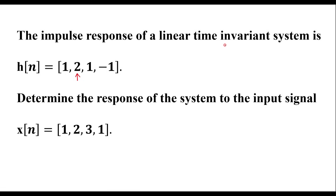The impulse response of a linear time invariant system is h of n equal to 1, 2, 1, minus 1. Determine the response of the system to the input signal x of n which is 1, 2, 3, 1. The arrow mark indicates the 0th sample for h of n; the remaining samples are first, second, and the value minus 1. For x of n, the 0th sample is the first, followed by the first, second, and third samples.